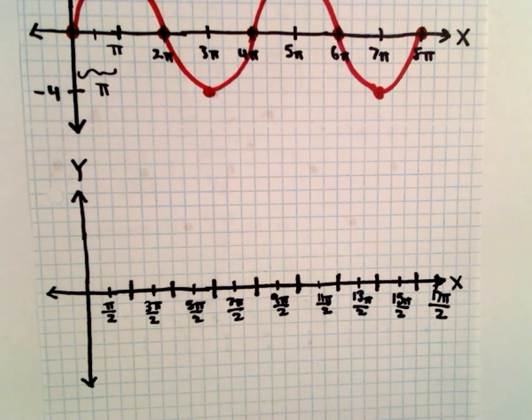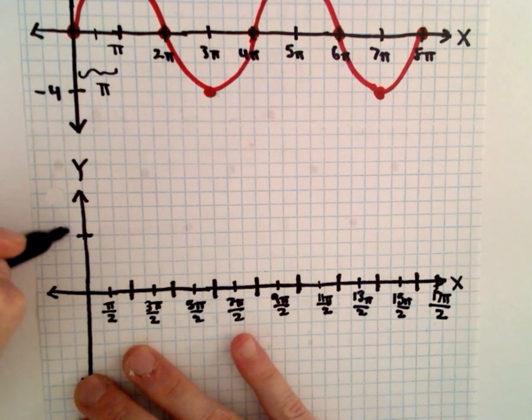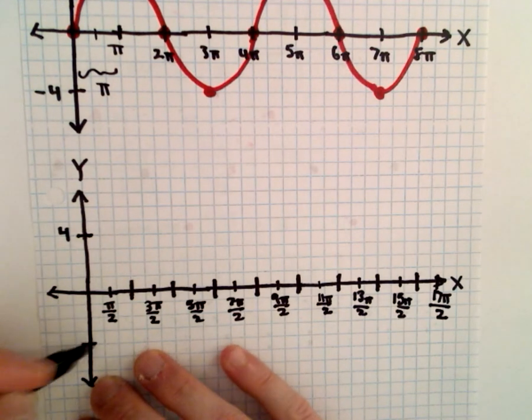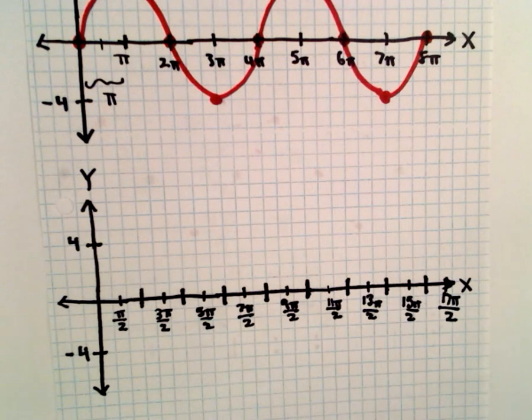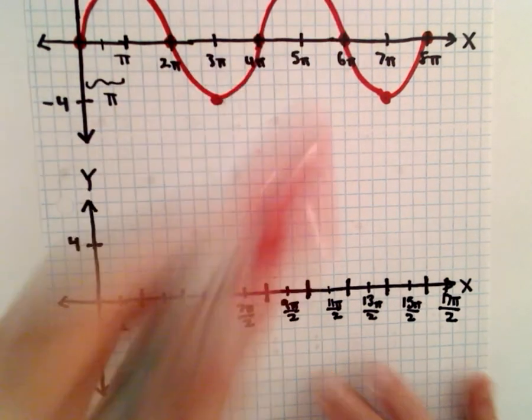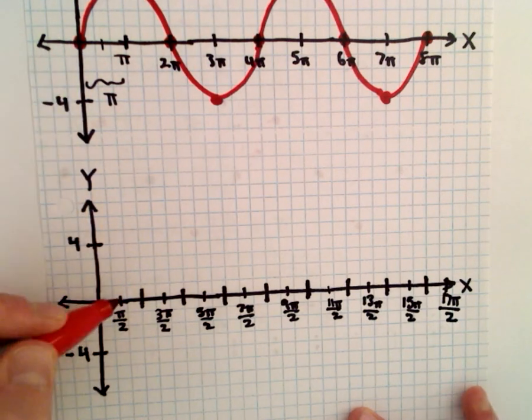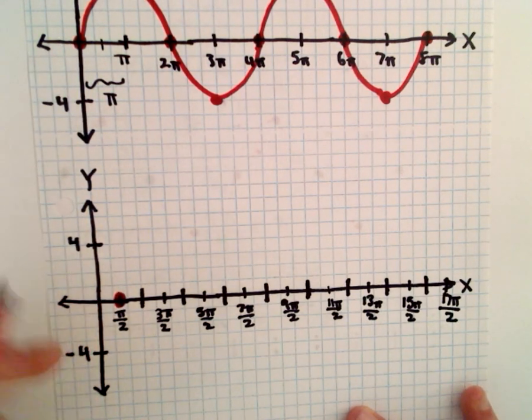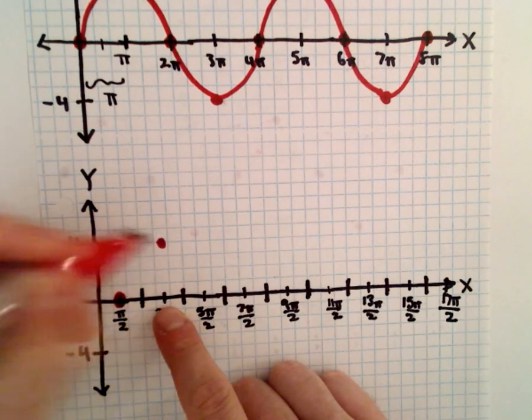So again, a little cluttered, but that's what happens if you try to label everything. Now it's pretty much the same. I mean, it's the exact same shape. Everything's just moved over. So instead of being at 0, 0, it's going to be at pi over 2, 0. And then at 3 pi over 2, I'm going to be up here at positive 4. At 5 pi over 2, I'm going to be back at 0.